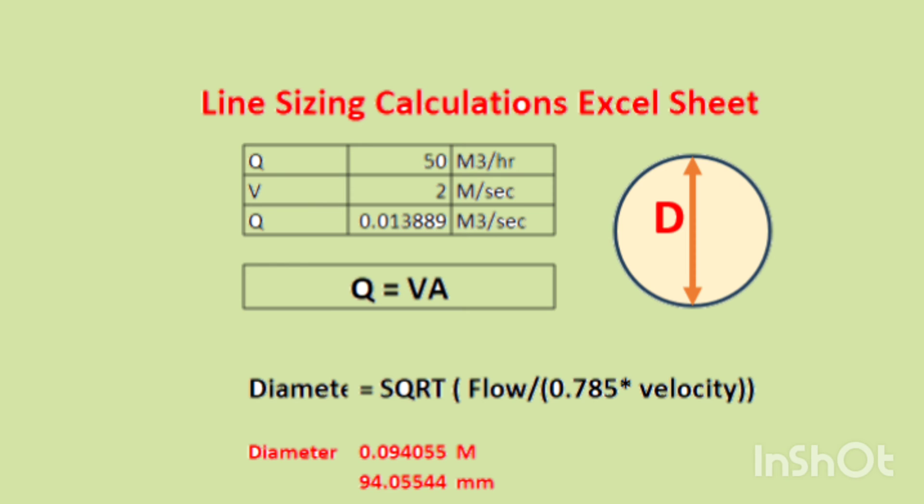If the pressure drop matches your requirement, then our considered velocity of 2 meters per second is OK, and our diameter calculation is also OK. If the required pressure drop and calculated pressure drop have a difference, then we have to rearrange this velocity, whether it is 2.5 or 1.5, depending upon the calculated pressure drop.